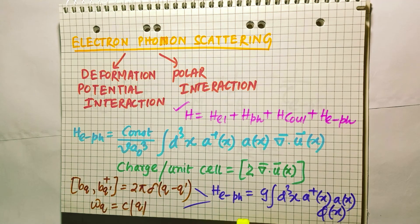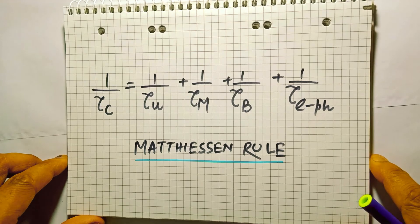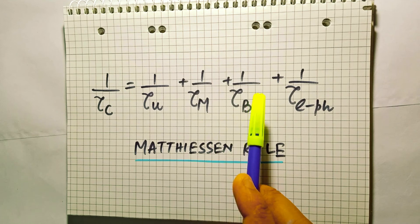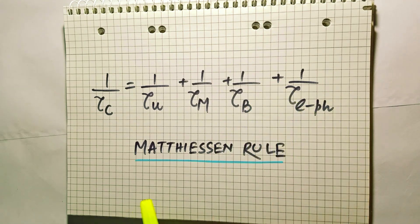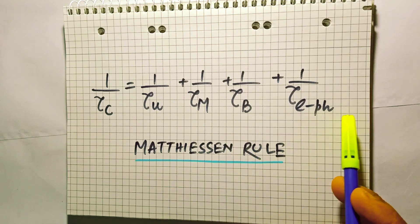Including all such scattering mechanisms, from Matthiessen's rule we can write the combined relaxation time tau_c as: 1/tau_c = 1/tau_U + 1/tau_M + 1/tau_electron-phonon, where U is for the Umklapp process, M is for impurity/boundary scattering, and the last term is for the electron-phonon interaction.